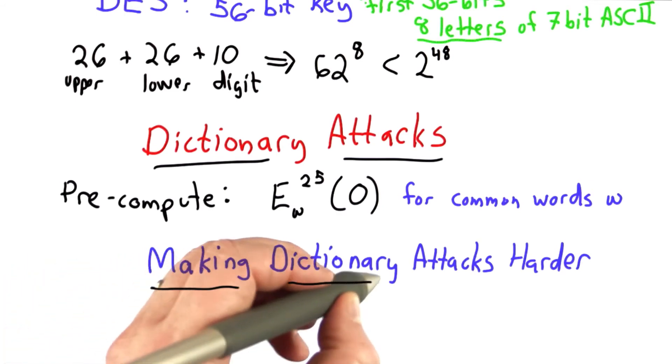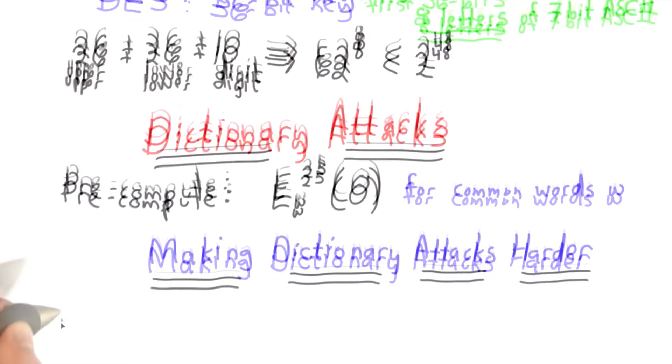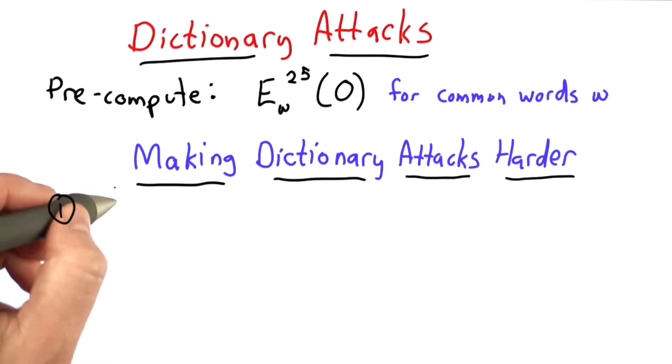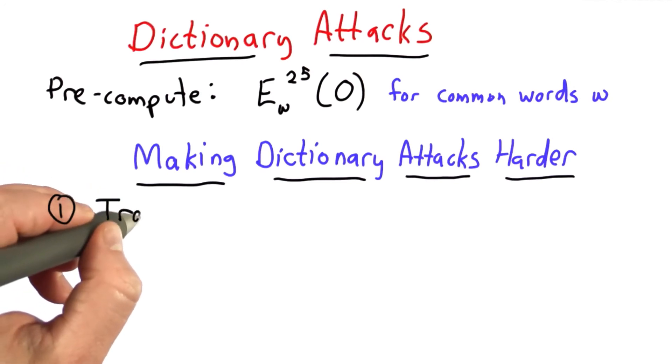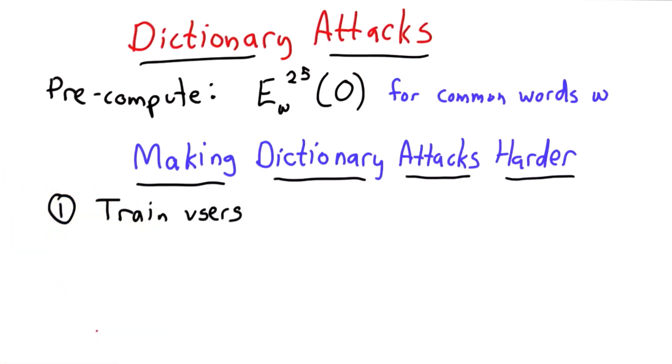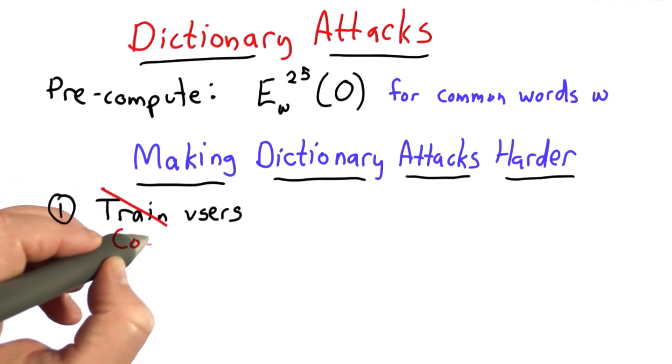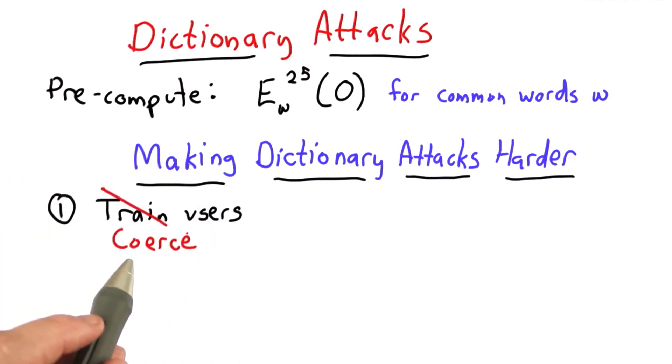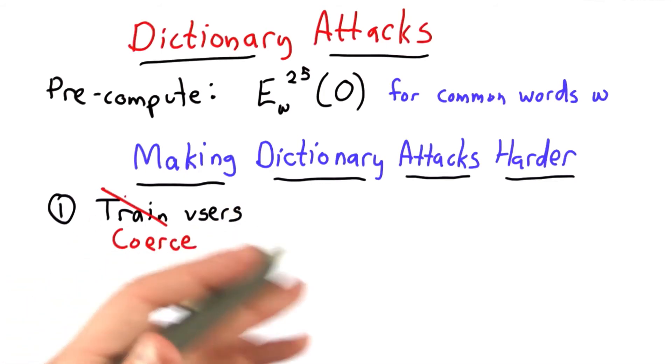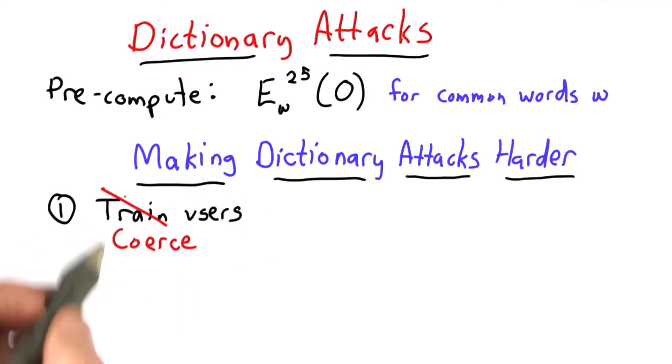So how can we make dictionary attacks harder? Well, one idea would be to train users to pick better passwords. Users are pretty hard to train. This usually means coerce instead. Force users to pick a password that satisfies some properties. It could be a minimal length, a mix of upper and lowercase letters and special characters. Many websites do this.